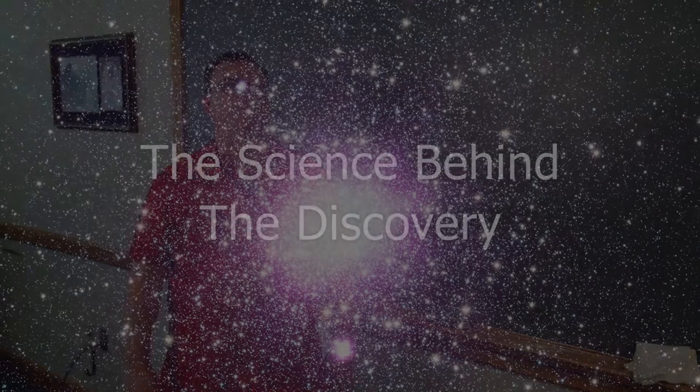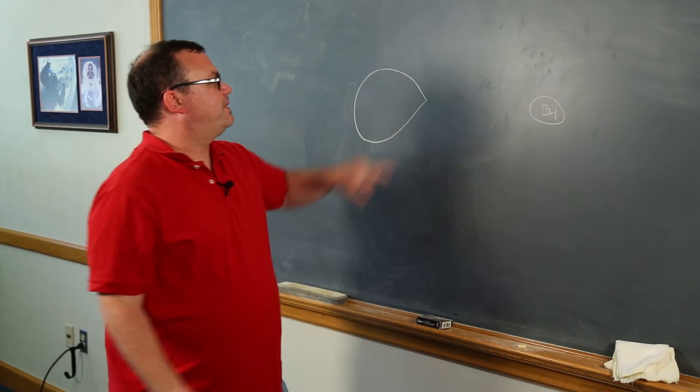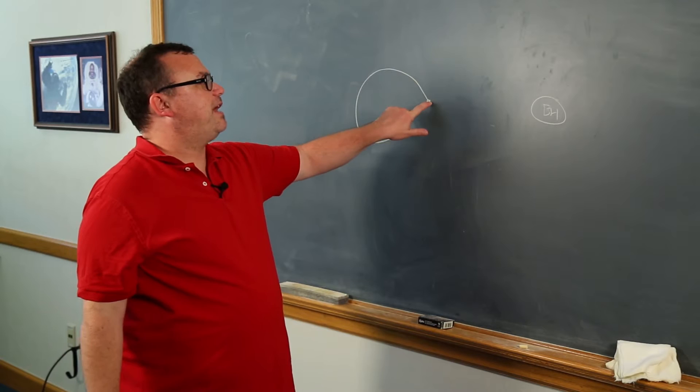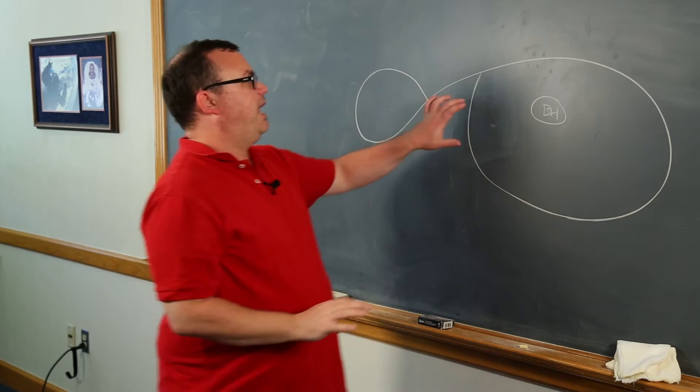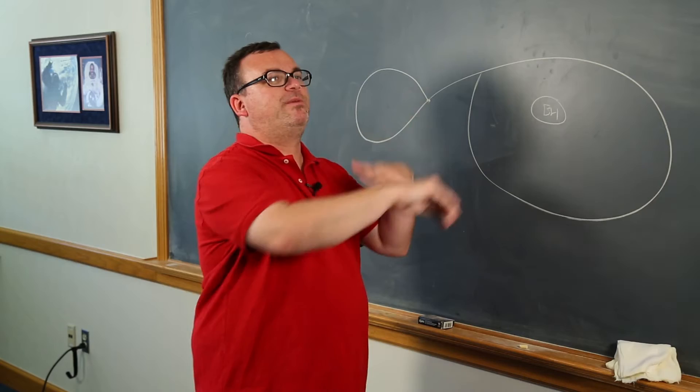If we put the black hole close enough to the star, what we can have is a case where right at this position on the star, the gravitational attraction to the center of this star and to the black hole are equal. And when that happens, material will spill off of the normal star and start falling in towards the black hole. And as the gas in this flow starts to rub up against itself, it ends up having some form of friction which causes the material to fall in instead of just orbiting.